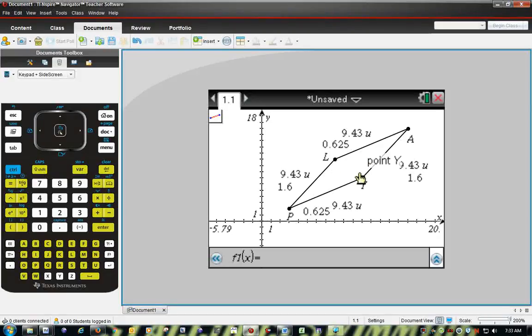And then you just click on the endpoints. For example, LY is one of them. And then PA is one of them. And those are going to be those are your diagonals.